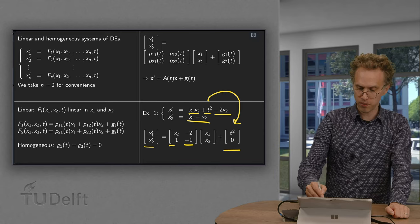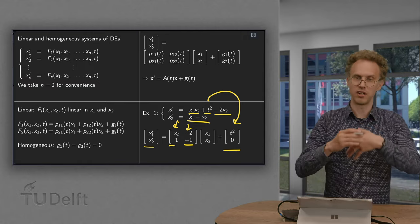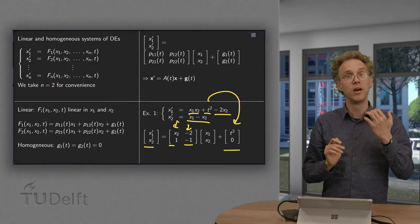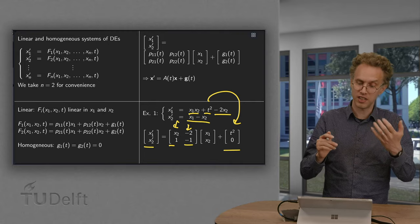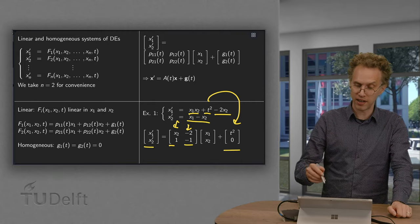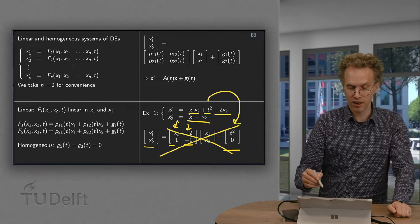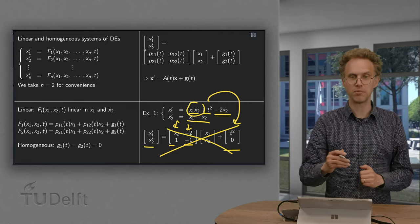So we could put x2 in a matrix. Now we get an x1 times x2. But that's not what we want. We want a matrix depending only of t at most. So this is not allowed. So what we have here in fact is not a linear system of differential equations due to this term x1 times x2.